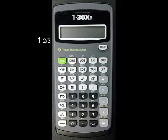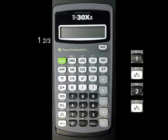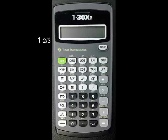For example, to enter 1 and 2 thirds, press 1, press the ABC button, enter 2, press the ABC button again, then enter 3. The screen reads 1 underscore 2 over 3.